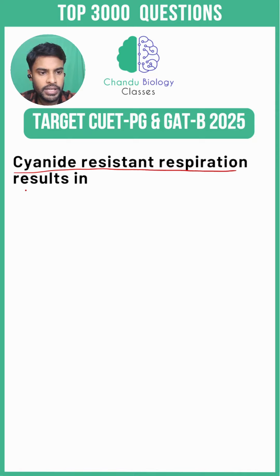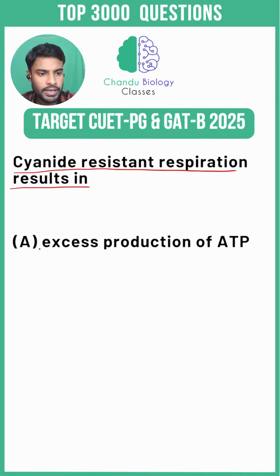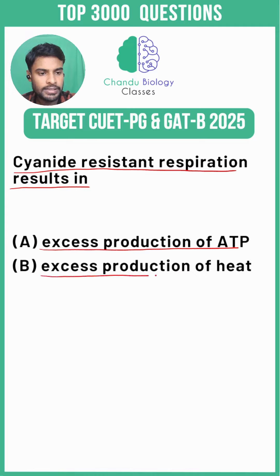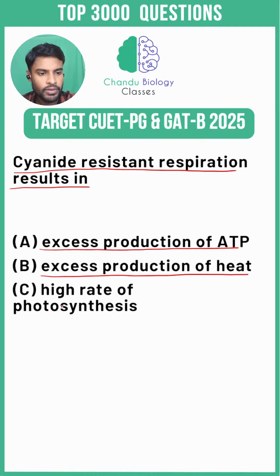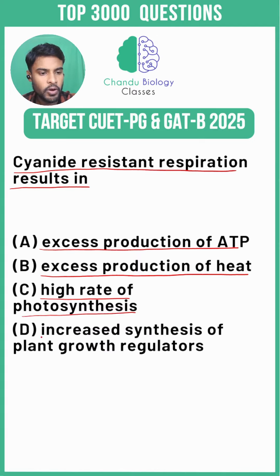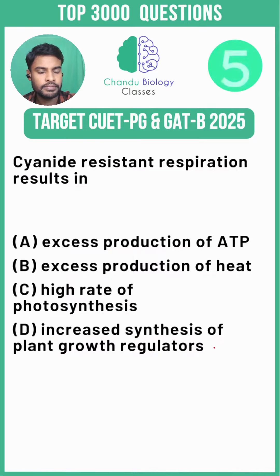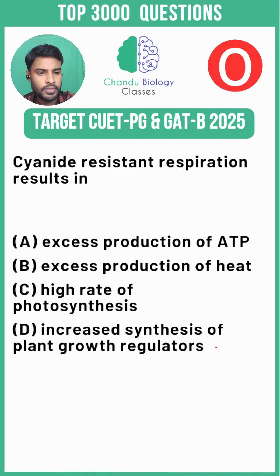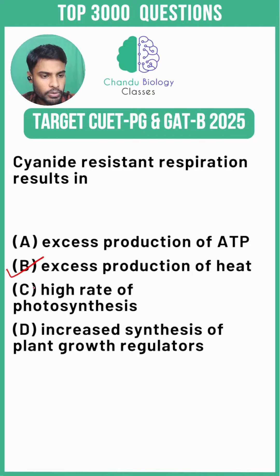Cyanide-resistant respiration results in: Option A, excess production of ATP; Option B, excess production of heat; Option C, high rate of photosynthesis; or Option D, increased synthesis of plant growth regulator. The correct answer would be Option B.